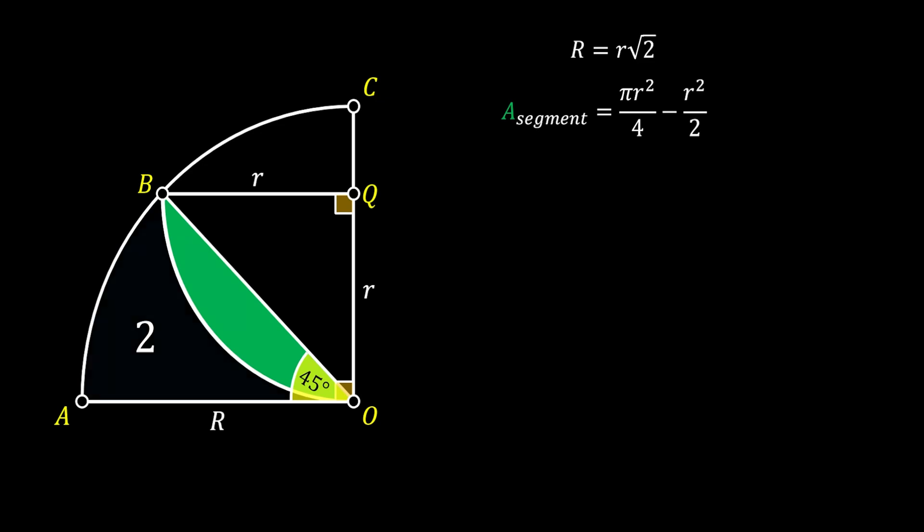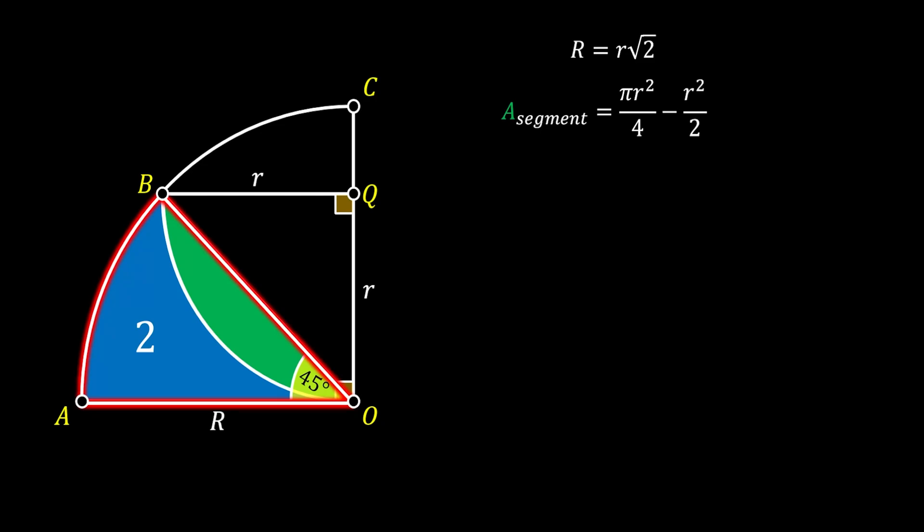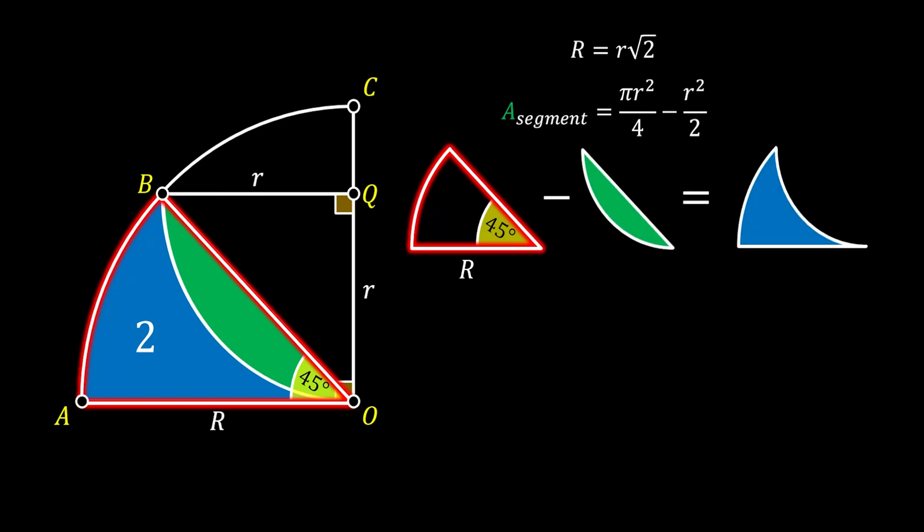Let's have a look at our segment with the area of 2. This segment combined with our previous green segment both makes this circular sector. So if we take the area of this circular sector with the central angle of 45 degrees and the radius of capital R and subtract the area of our green segment, we will get the area of our blue segment. Now let's write this down as a formula. First the formula for the circular sector will be the central angle over 360 times the area of full circle which is pi R squared minus the area of our green segment will be equal to the area of the blue segment which equals to 2.